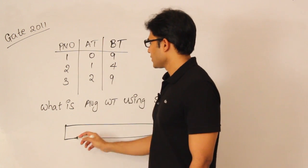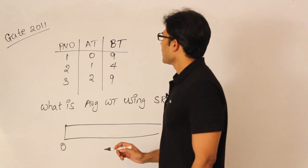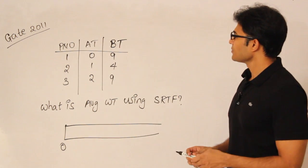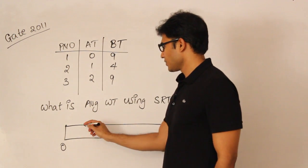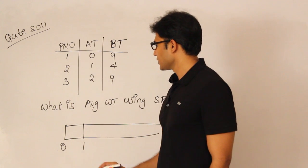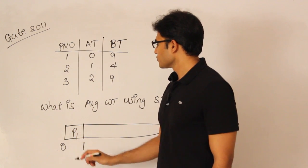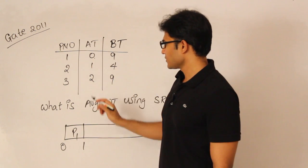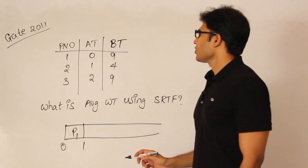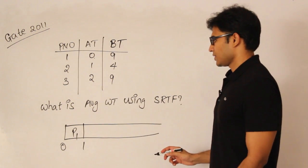The arrival time of the first process is at 0 and the burst time is 9. But as I said, you are supposed to execute it for 1 unit and then wait and see. So P1, since there is only 1 process at 0, I am taking it. Now you wait and see if any process has arrived at time 1.